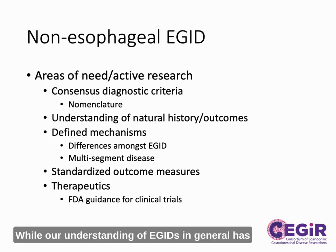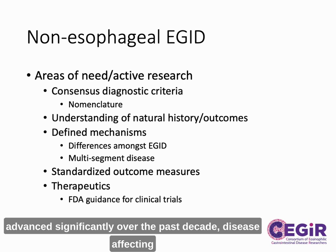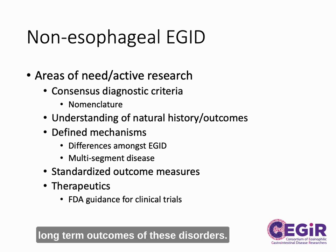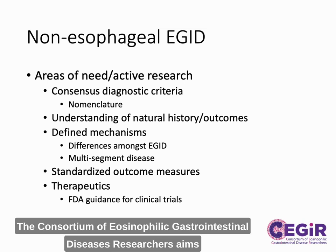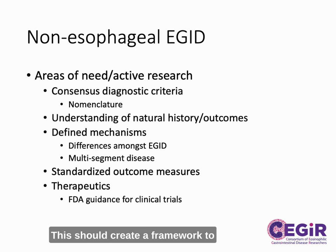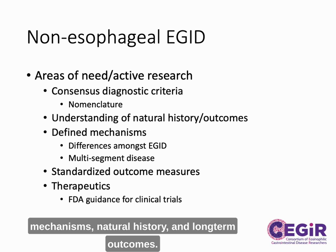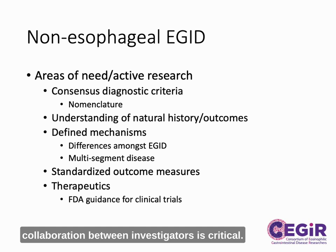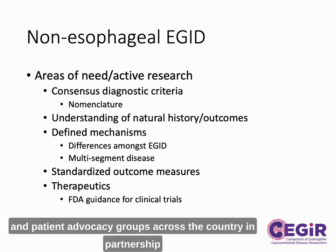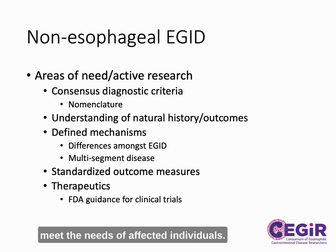While our understanding of eGIDS in general has advanced significantly over the past decade, disease affecting the lower GI tract remains poorly understood. Significant work is needed to better understand the pathogenesis, natural history, and long-term outcomes of these disorders. The Consortium of Eosinophilic Gastrointestinal Diseases researchers aims to address these areas of need. Work is underway to develop consensus guidelines for the diagnosis of these disorders, which should create a framework to allow for further research into disease mechanisms, natural history, and long-term outcomes. Given the rarity of these disorders, collaboration between investigators is critical. This work can be accomplished through partnership with patients and patient advocacy groups across the country, and partnership with the FDA to focus on how best to meet the needs of affected individuals.